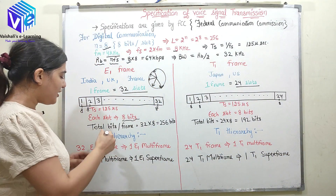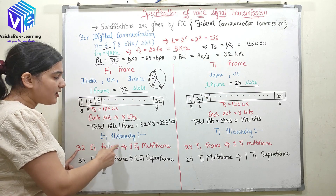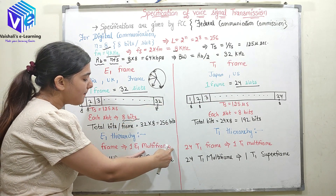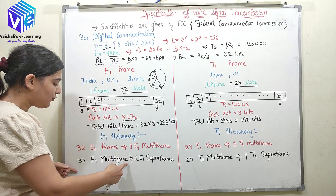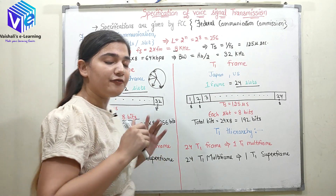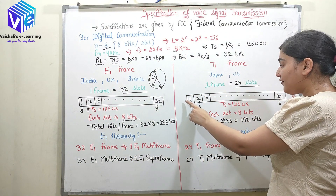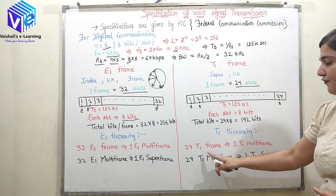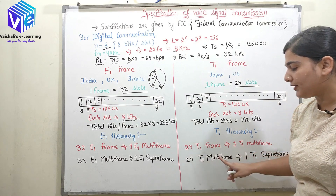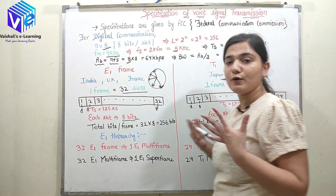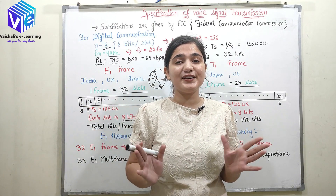For the hierarchy: 32 E1 frames make one E1 multi-frame, and 32 E1 multi-frames make one E1 super-frame. Similarly, 24 T1 frames make one T1 multi-frame, and 24 T1 multi-frames make one T1 super-frame.